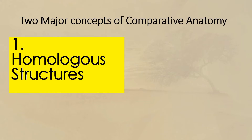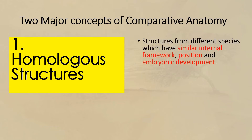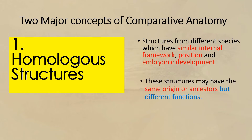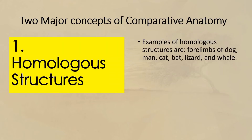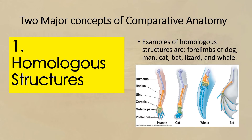The first is homologous structures — structures from different species which have similar internal framework, position, and embryonic development. These structures may have the same origin or ancestors but different functions. Examples of homologous structures are the four limbs of dog, man, cat, bat, lizard, and whale. This type of evolution is called divergent evolution.